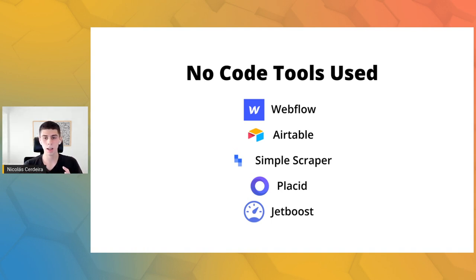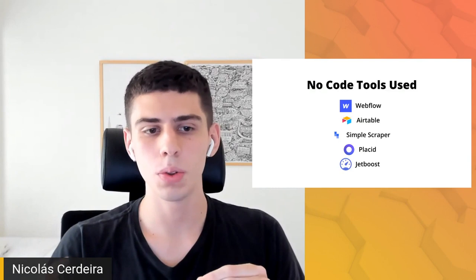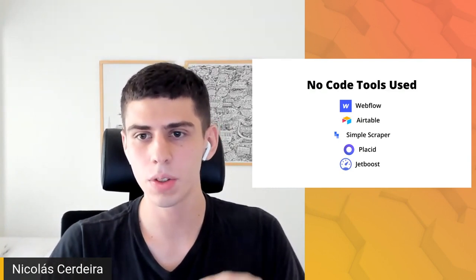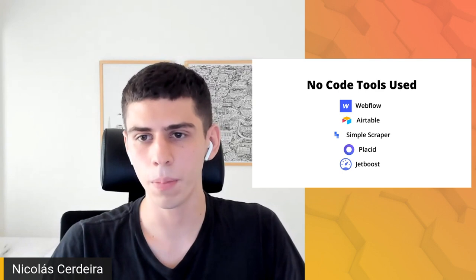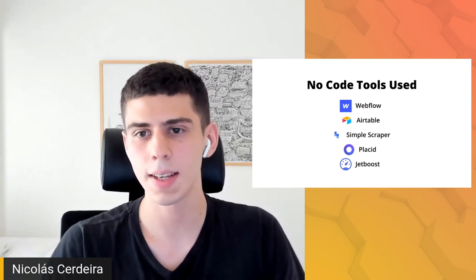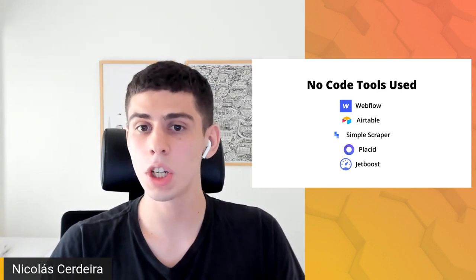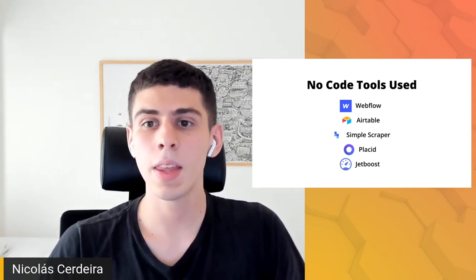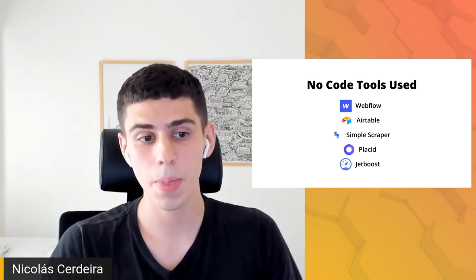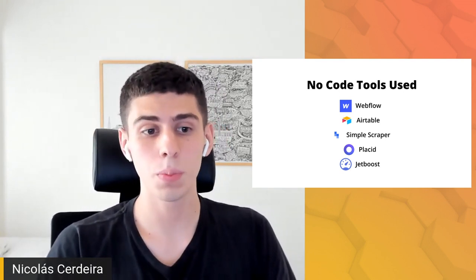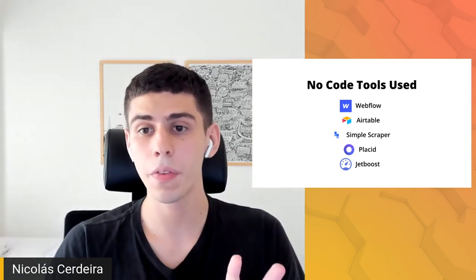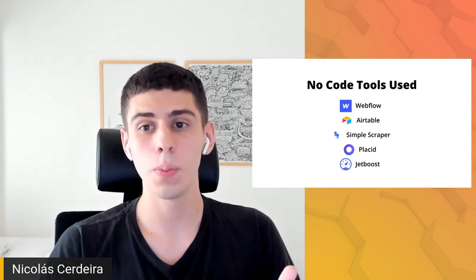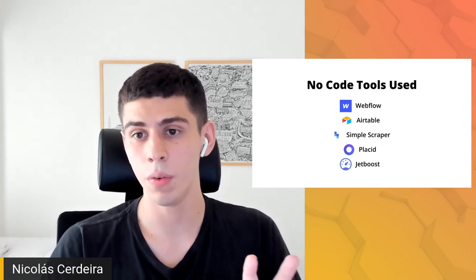That was all for this talk. I hope you learned how to programmatically create content that ranks on Google and brings organic, targeted users. As a quick recap of the no-code tools I used: Webflow to build and host websites; Airtable and Google Sheets for databases; Simple Scrapper to scrape online content; Placid to programmatically create images; and JetBoost to build dynamic filters on Webflow.